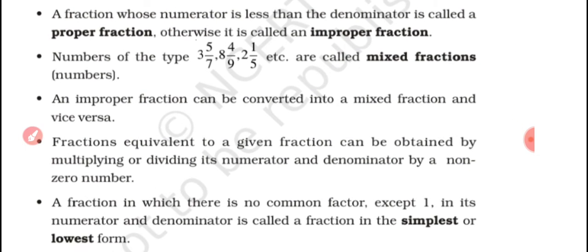Numbers of the type 3 and 5/7, 8 and 4/9, 2 and 1/5, etc. are called mixed fractions. An improper fraction can be converted into a mixed fraction.